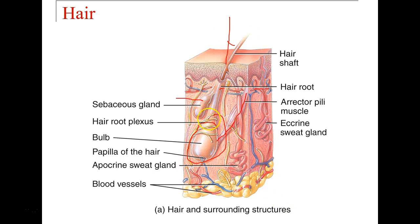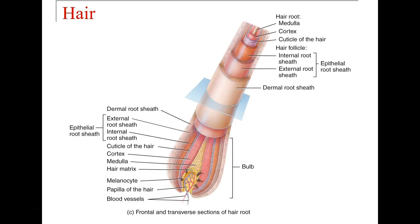We also have a small root plexus, which provides innervation or nerve supply to the root. At the base we have blood supply and drainage. Here we can see the root — those most inner layers — while the follicle is the more outer layers, and the bulb is where everything comes together creating the hair itself.